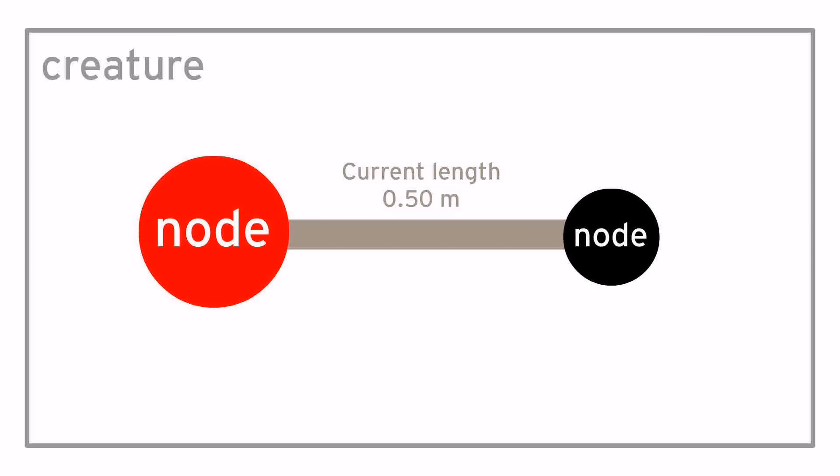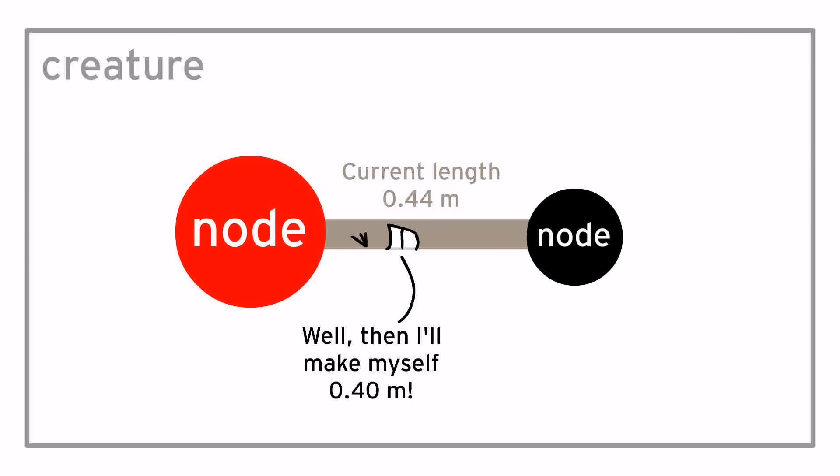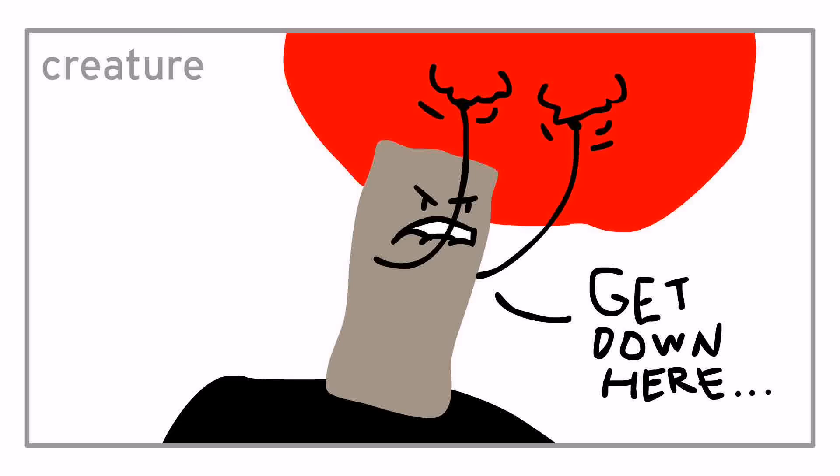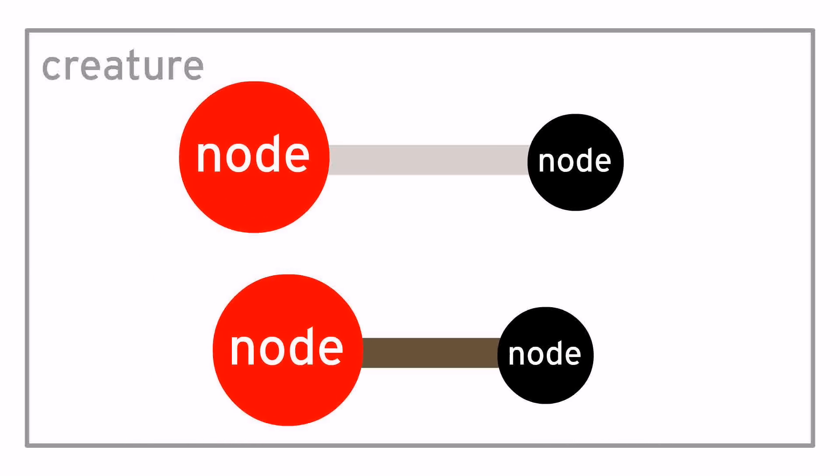Basically, a muscle is rarely exactly the length it's trying to be. It's always trying to push or pull its two nodes, so that it reaches its target length. How hard can it push or pull? That's its strength. The higher a muscle's strength is, the more opaque it appears.